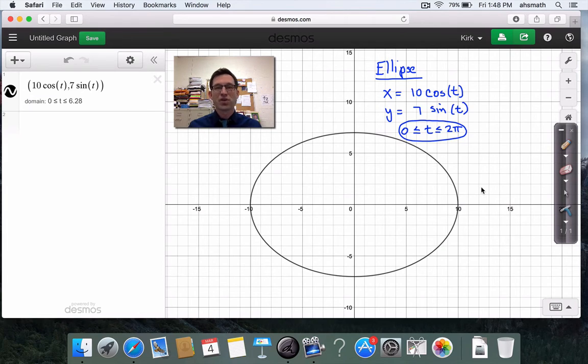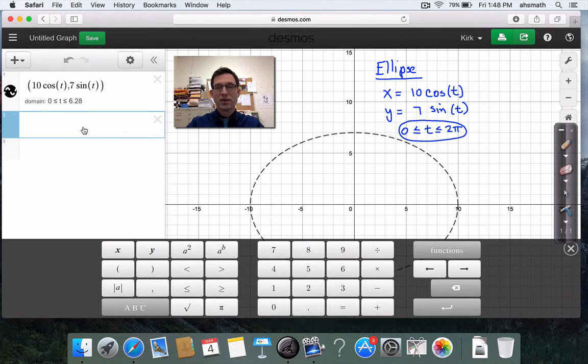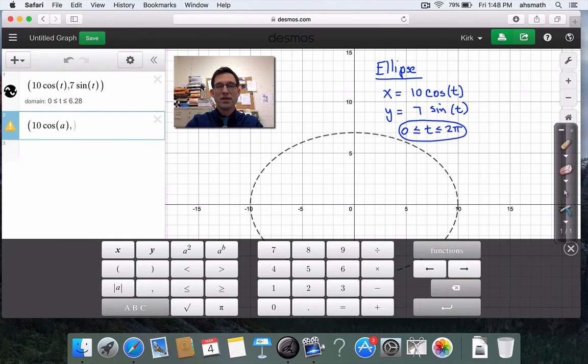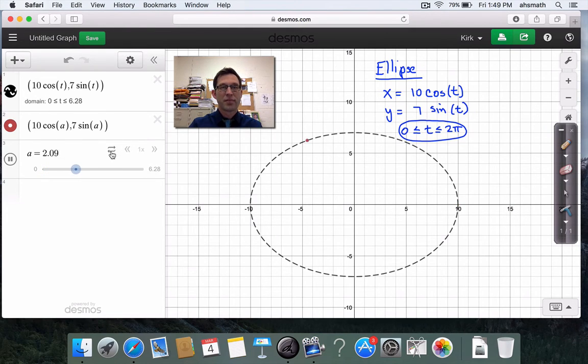Now, again, what's kind of disturbing about this is that I don't really know where the ellipse begins, where the ellipse ends, whether or not an object goes around this path in a clockwise manner or a counterclockwise manner. So what I'm going to do is I'm going to pull that same trick I did before, 10 times the cosine of a, 7 times the sine of a, and I'll add a slider for a. Just like before, Desmos won't allow me to use that keyboard to put a 2 pi in here, so I'll just do 6.28. Pull it all the way back, and play.